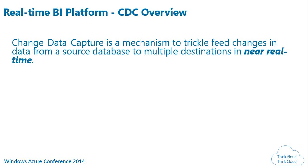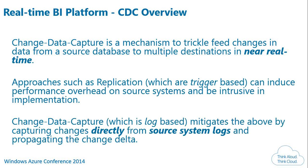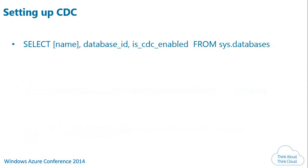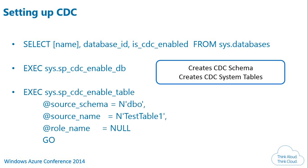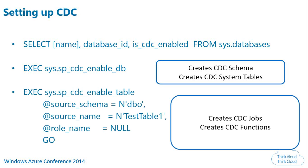CDC has allowed you to identify what changes have happened by automatically logging those changes in a separate table. Setting it up was simple: we queried to find out if the database was CDC-enabled, then enabled it by executing a system stored procedure. This created the CDC schema and CDC system tables. Enabling it on a particular table created CDC jobs — capture and cleanup — and also created CDC functions that help identify old versus new changes.